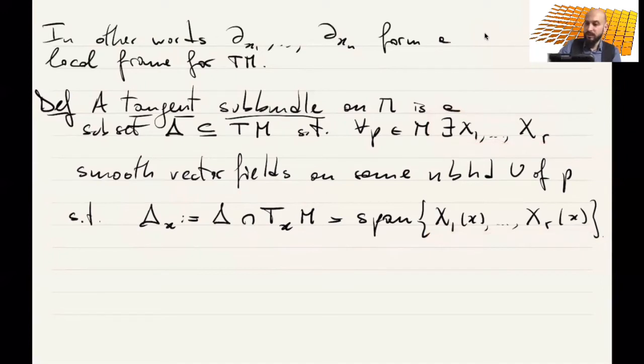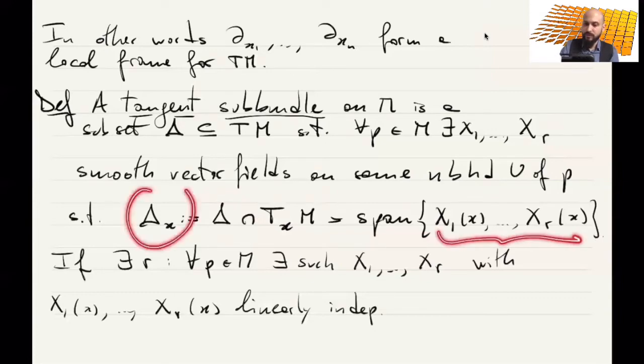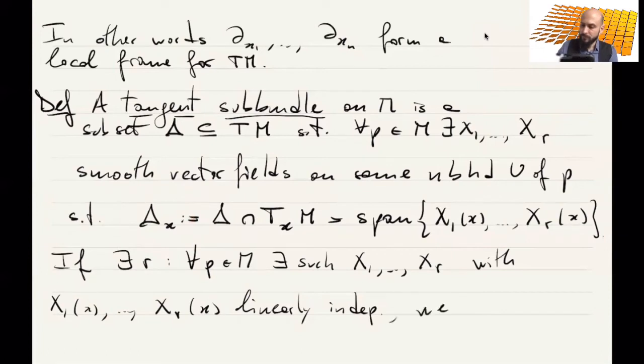Actually, what we are really interested in is the case where these are a basis and not just a spanning set. If there exists some r that is constant such that for all p in M, there exist such x1 to xr with x1 at x to xr at x linearly independent, they actually form a basis of delta x, then we say that delta has rank r.